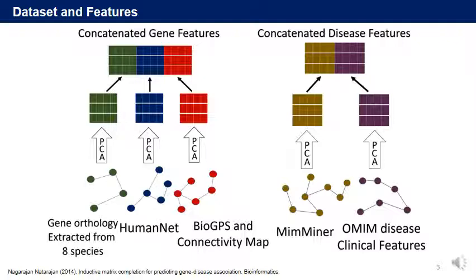Three data sources were used to create gene features: gene orthology extracted from a species, HumanNet, BioGPS, and Connectivity Map. We perform PCA for each dataset and lower the dimension to 100.